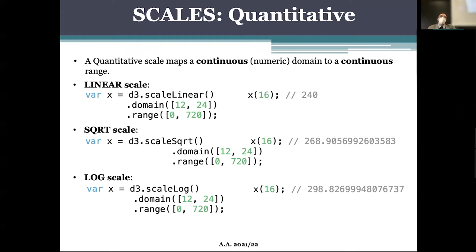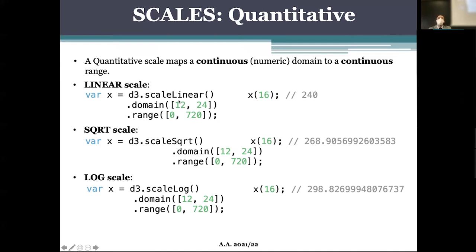We don't have only a pure linear behavior in quantitative scales — there are also the square scale, which returns the square value on the range, and the log scale, which is very useful when we have a very extended data domain — for example data ranging from units to millions. If treated linearly, the very highest values would squeeze the low values making them invisible. Take an example of comparing people with incomes of billions of dollars with people earning units of dollars — the outlier values dominate and the low ones become invisible.